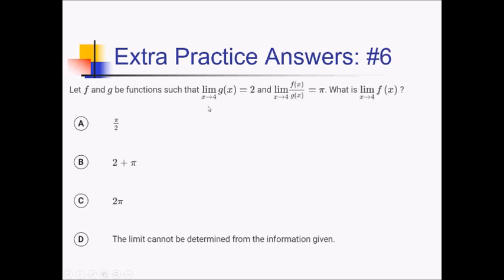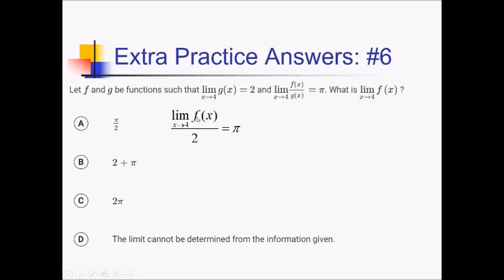On this one, we're given f and g such that the limit as x approaches 4 of g is 2, and the limit as x approaches 4 of f divided by g is pi. We want the limit of f as x approaches 4. When you have a quotient of two limits, you can take their limits separately, as long as the bottom limit doesn't equal 0. Since the limit of g at x equals 4 is 2, we rewrite: limit of f of x over 2 equals pi. Multiplying both sides by 2 gives the limit as x approaches 4 of f of x equals 2 pi, which is answer choice C.